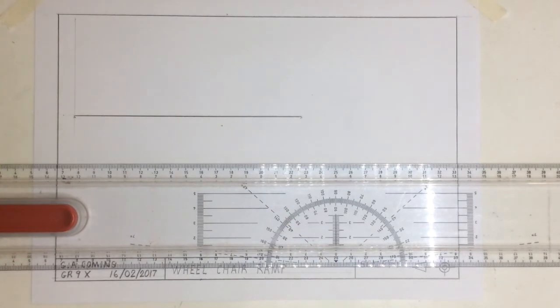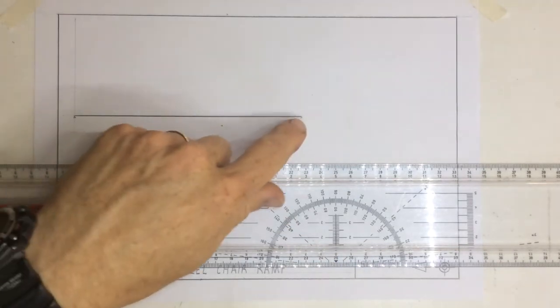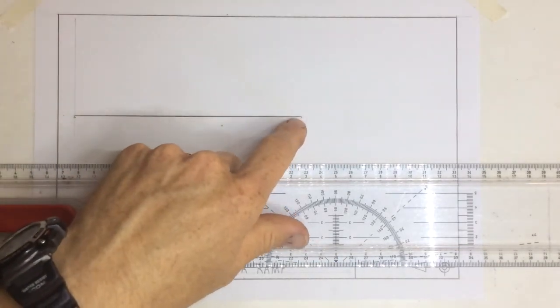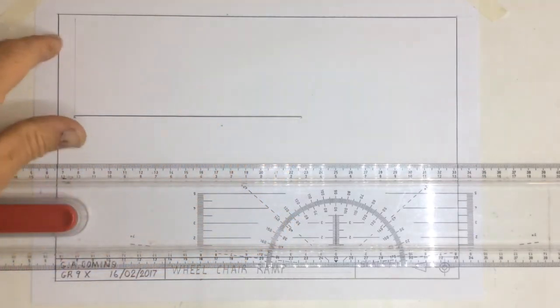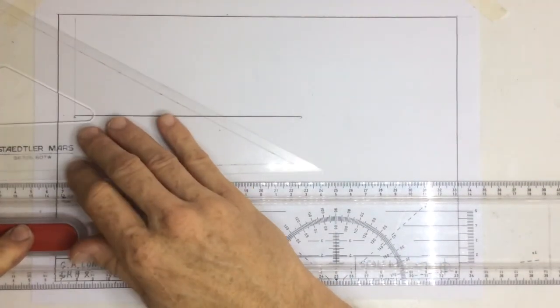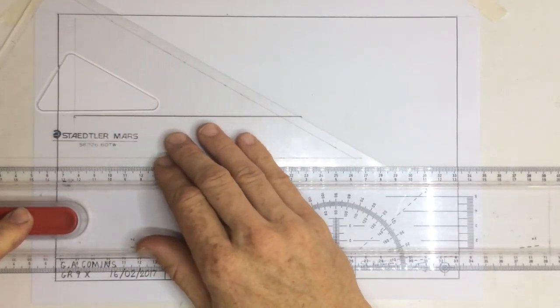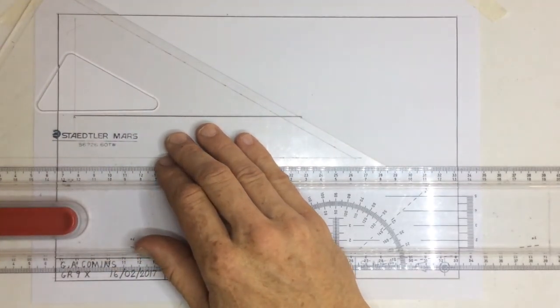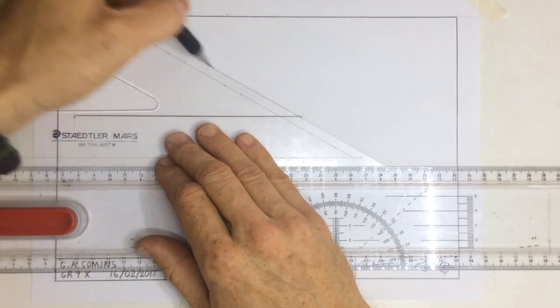Once I've got that in place, I've told you that I want a ramp going at a gradient of 15 degrees. So what I need to do is draw a 30 degree angle with my set square.